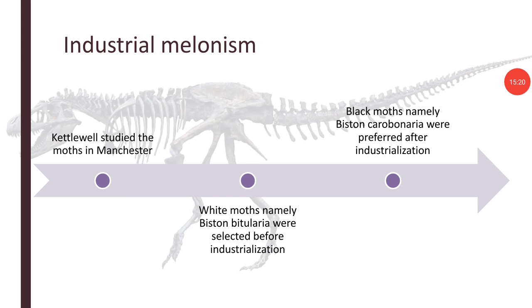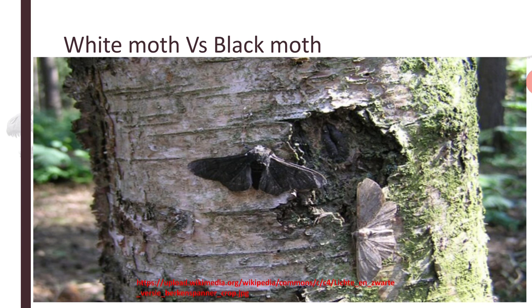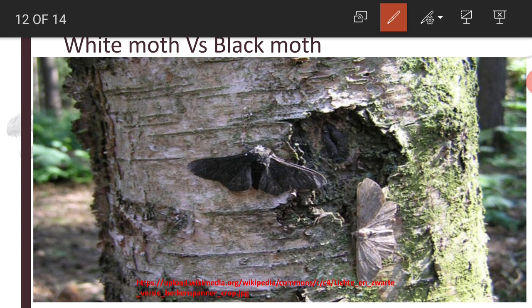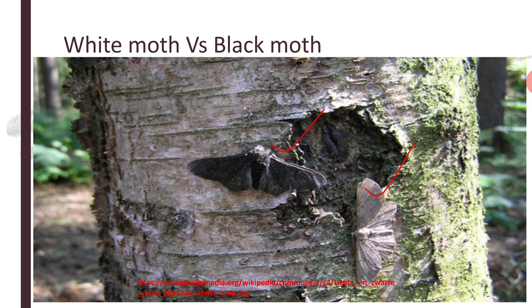Here you can see both white moths and black moths in the diagram. White moths are Biston betularia and black moths are Biston carbonaria. This concept of Industrial Melanism in support of natural selection was proposed by Kettlewell, and this case study took place in Manchester.